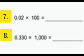Question number 7: 0.02 multiplied by 100. The product will be 2. Similarly, question number 8: 0.330 multiplied by 1,000. The product will be 330.